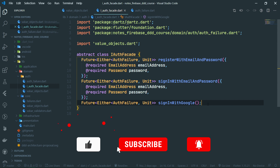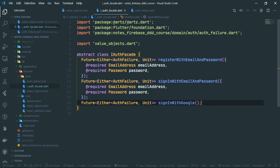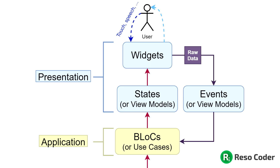Subscribe and hit the bell to join us on our quest for becoming in-demand Flutter developers. As you can see on the diagram, a BLoC receives events from the UI which contain raw data, and then the BLoC outputs states which contain validated data. This is signified by the red arrow, which means entities and validated value objects, and the purplish arrow means raw data. The BLoC we are going to create in this part is the sign-in form BLoC.